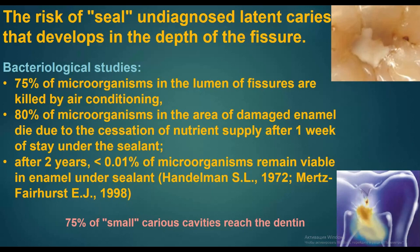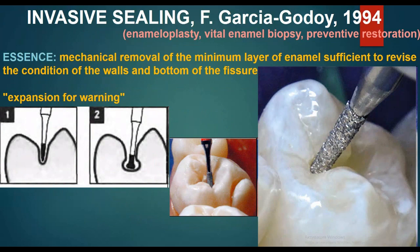75% of small carious cavities reach the dentin. Invasive sealing by Garcia-Godoy, 1994: also called enameloplasty, vital enamel biopsy, or preventive restoration. The essence is mechanical removal of the minimum layer of enamel sufficient to revise the condition of the walls and bottom of the fissure, with expansion for prevention.